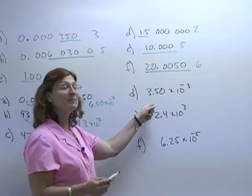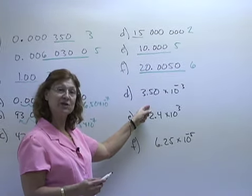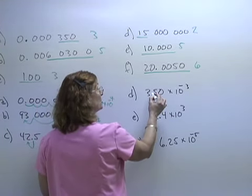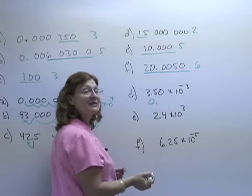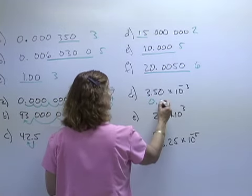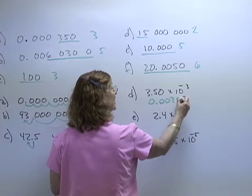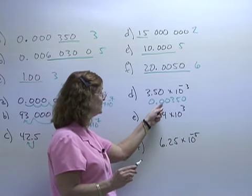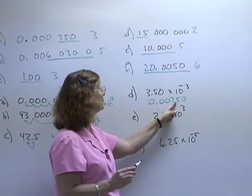In D, now I'm in scientific notation and I want to change it to a decimal form. So I have to move the decimal to the left because this number is less than one. So zero, zero, three, five, zero. And I can double check myself by saying if I move this decimal three places, it goes behind the three.